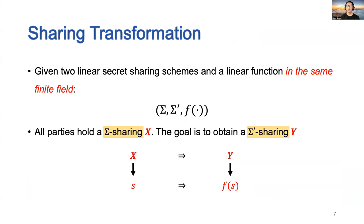Concretely, we consider the following problem. Given two linear secret sharing schemes and a linear function, suppose all parties hold a sharing x of the first secret sharing scheme with secret s. We want to transform it to a sharing y of the second secret sharing scheme with secret f(s). Informally, we want to transform one sharing to another one and apply a linear function on the secret.